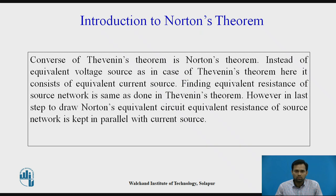Norton's theorem is basically the converse of Thevenin's theorem. Instead of an equivalent voltage source as in Thevenin's theorem, here it consists of an equivalent current source. Finding the equivalent resistance of the source network is the same as in Thevenin's theorem. However, in the last step to draw Norton's equivalent circuit, the equivalent resistance is kept in parallel with the current source.